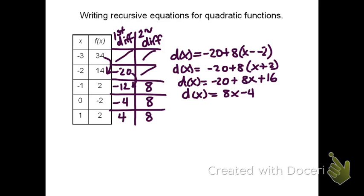When I write the recursive equation here, I know that I've got to start by defining the beginning term, so in this case, f of negative 3 was 34. Any term is the previous, and now I know, also, plus 8x minus 4.